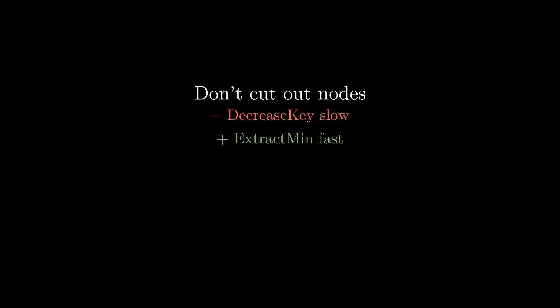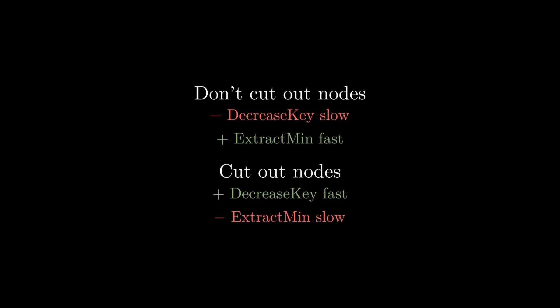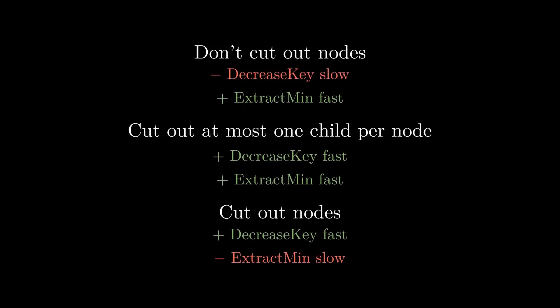So we are in a dilemma. If we don't cut out nodes, DecreaseKey will not be as fast as it could be. But if we do, there is the risk our node degrees grow too large, which slows down ExtractMin. However, in practice things don't look too bad: situations where a tree loses a lot of nodes are probably quite unlikely. If we only cut out a few nodes here and there, our trees will still at least somewhat resemble binomial trees and node degrees will remain low. But how can we be sure? This is where perhaps the most ingenious idea of Fibonacci heaps comes in: a compromise. We only allow cutting out one child per node.